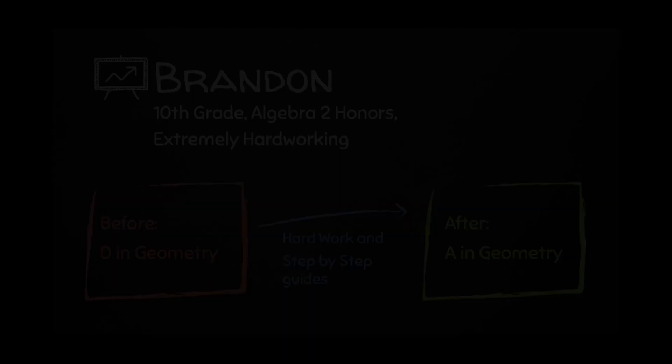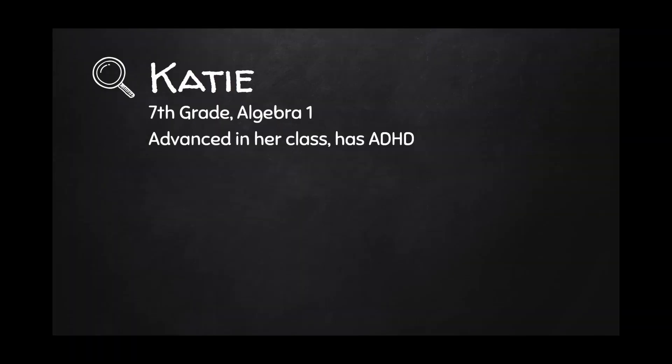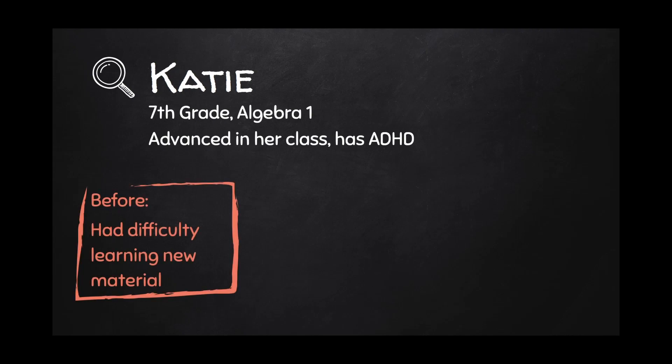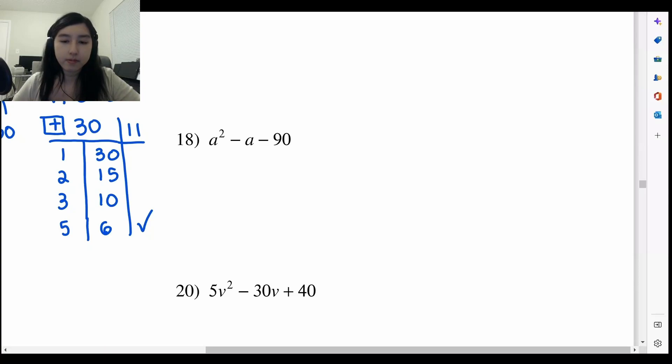Now, you're going to see my session with Katie. Katie is in the seventh grade and is advanced for her grade. She's currently in Algebra 1 and has Attention Deficit Hyperactivity Disorder. Sometimes Katie gets distracted and her mind wanders. However, when she's focused, she never fails to astound. Here, you can see Katie is working on factorization with quadratic functions. She hasn't learnt it in school yet, but because she is so far ahead, I have to challenge her with advanced topics for her age.